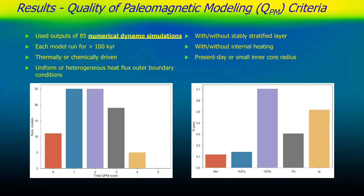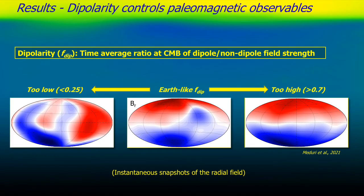Looking at individual criteria, the reversal criterion and equatorial dispersion are the two that have the most difficulty being satisfied. As described in Domenico Maduri's recent paper, there seems to be a trade-off: either a model has enough variability to reverse but VGP dispersion is too great, or VGP dispersion is in the earth-like range but there's not enough variability to reverse. Walking that knife edge remains an ongoing challenge.